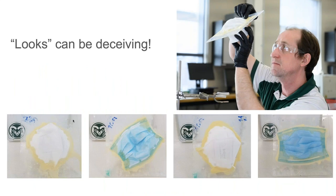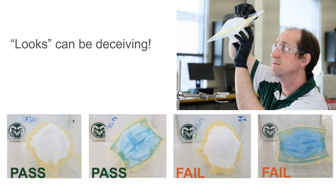Looks can be very deceiving. At the bottom of this slide are four different masks that came into the lab — you've probably worn some of these. They're provided from four different manufacturers, even though they look the same. The two white ones are called KN95s — KN is really just the Chinese version of N95, with their own standard. The blue ones are surgical masks that claim to meet N95 standards for filtration. Only two of these masks passed our N95 test, which is a thumbs-up or thumbs-down test — you either pass it or you fail it. By looking at a mask, you can't necessarily tell whether it's good or bad.